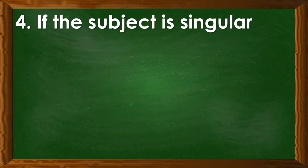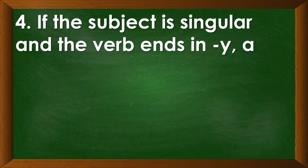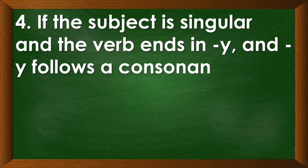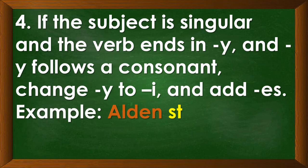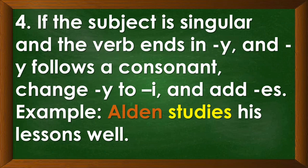Number four: if the subject is singular and the verb ends in Y and Y follows a consonant, change the Y to I and add ES. Example: Alden studies his lessons well. Alden is singular and study ends with letter Y following a consonant, so Y changes to I and add ES.